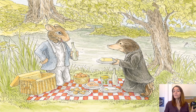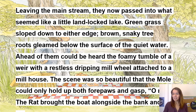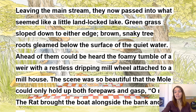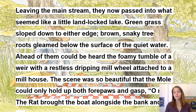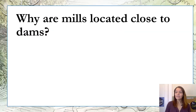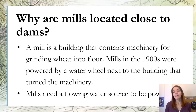This is our setting, the willows and countryside. When we left Rat and Mole, they were about to have lunch along the backwater. Leaving the mainstream, they now passed into what seemed like a little landlocked lake — that means surrounded by land. Green grass sloped down to either edge. Brown, snaky tree roots gleamed below the surface of the quiet water. Ahead of them could be heard the foamy tumble of the weir, with a restless dripping mill wheel attached to a mill house. Mills are buildings that contain machinery for grinding wheat into flour. In the 1900s the roots were powered by a water wheel next to the building, and it turned the machinery. Mills need a flowing water source to be powered, so that's why they're close to dams.